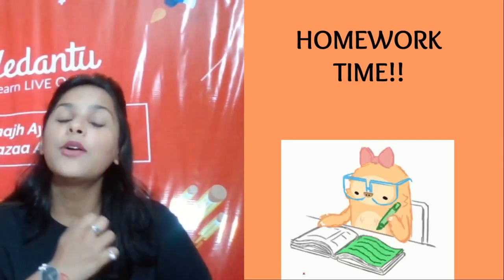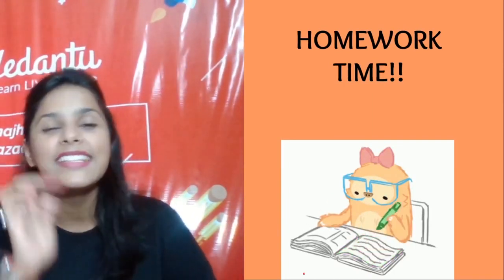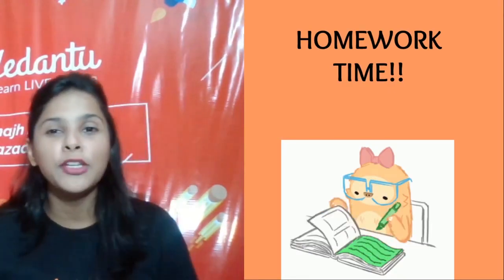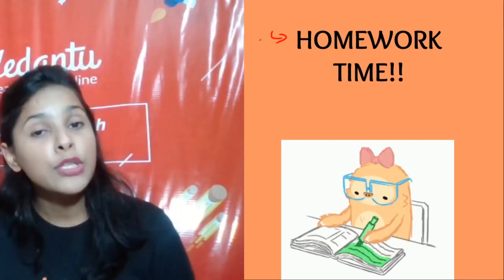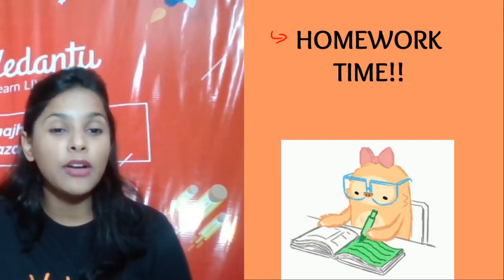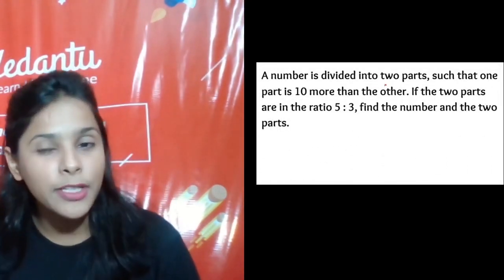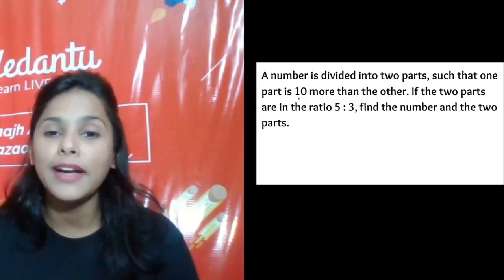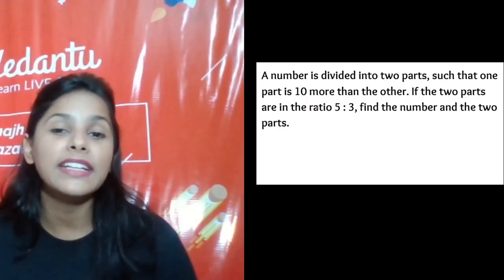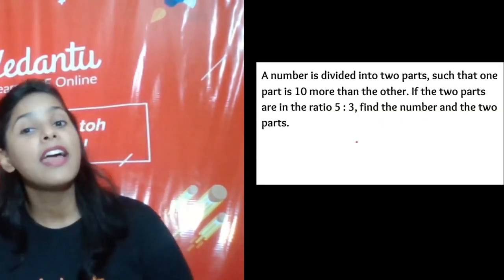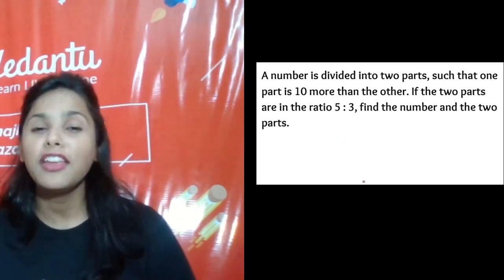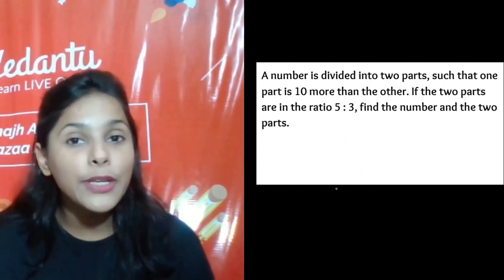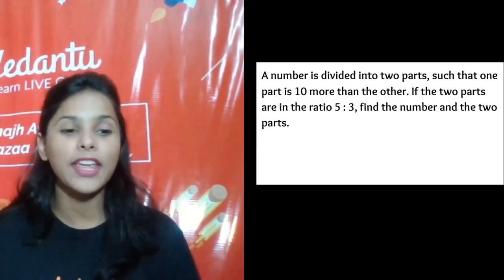Now it's homework time! I know my pirates will definitely do the homework. Apply the same concept: 'A number is divided into two parts such that one part is 10 more than the other. If the two parts are in the ratio 5:3, find the number and both parts.' Let me know your answers in the comments!